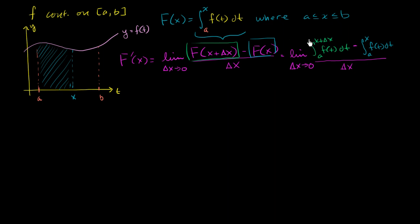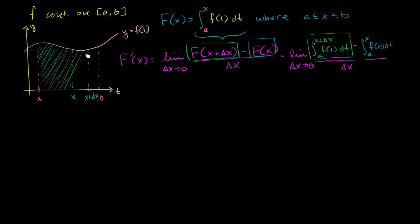Now, what is this equal to? Let me rewrite it using these integrals. This is going to be equal to the limit as delta x approaches 0 of: what's F of x plus delta x? You get the definite integral from a to x plus delta x of f of t dt. And from that, you subtract F of x, which we've already written as the definite integral from a to x of f of t dt. And all of that is over delta x.